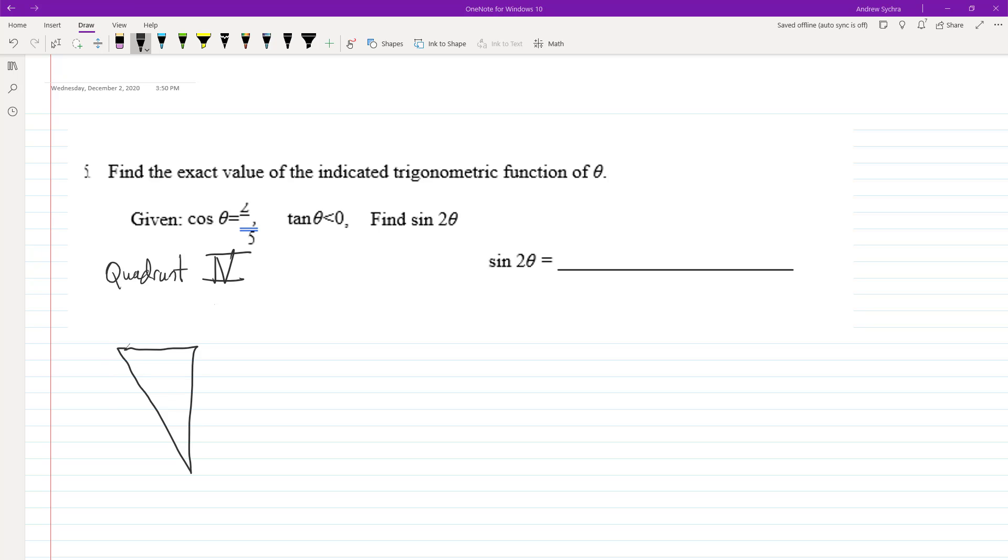We're given that cosine of theta is equal to 2 over 5, it's just not formatted right, and then we know that tangent of theta is less than 0.